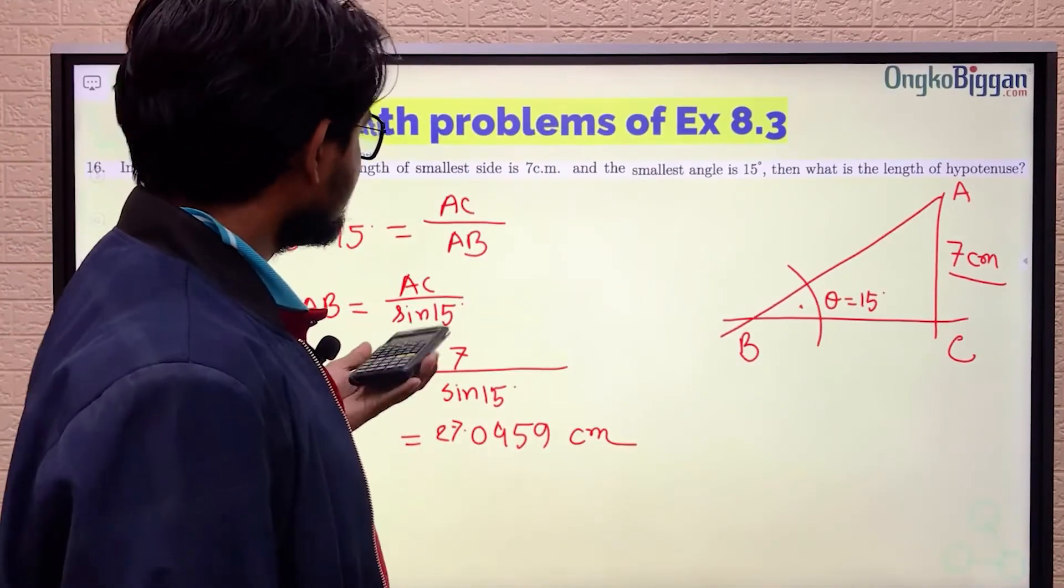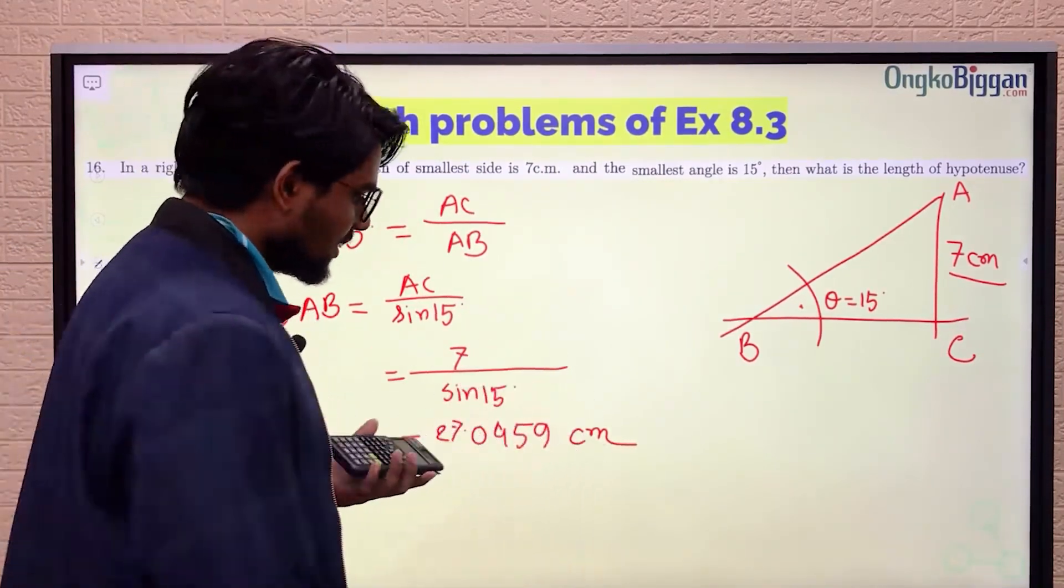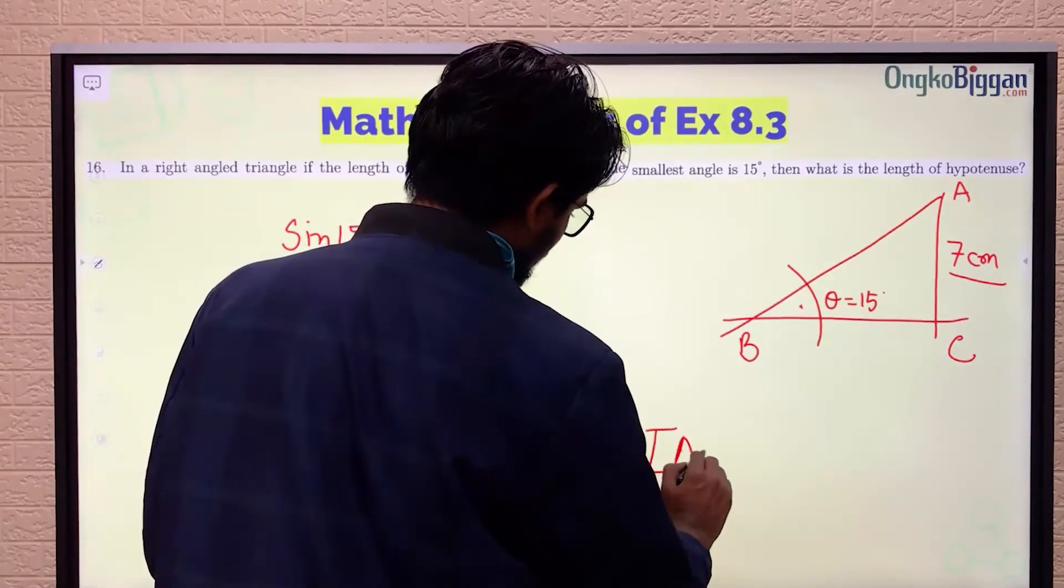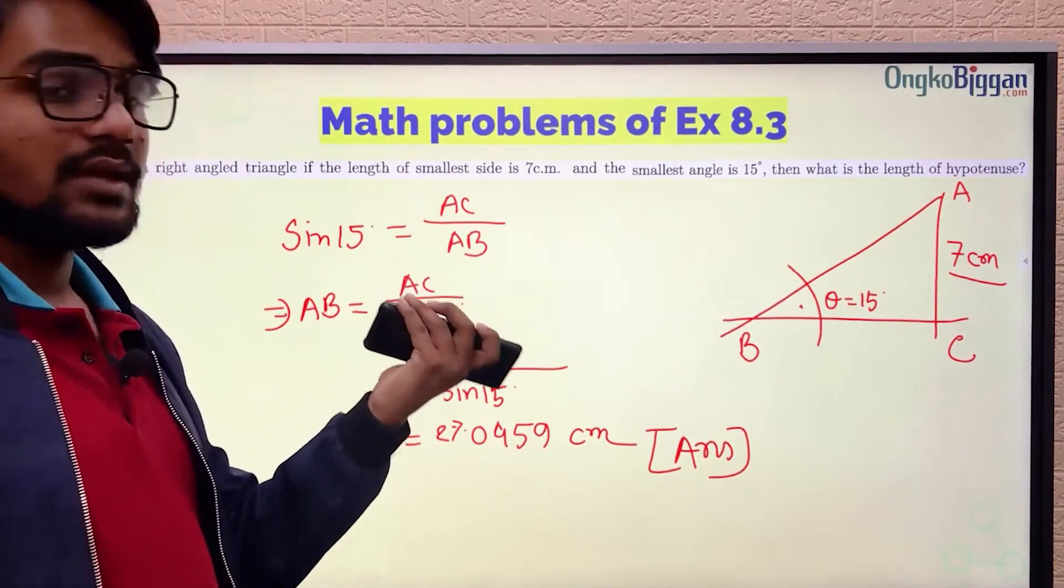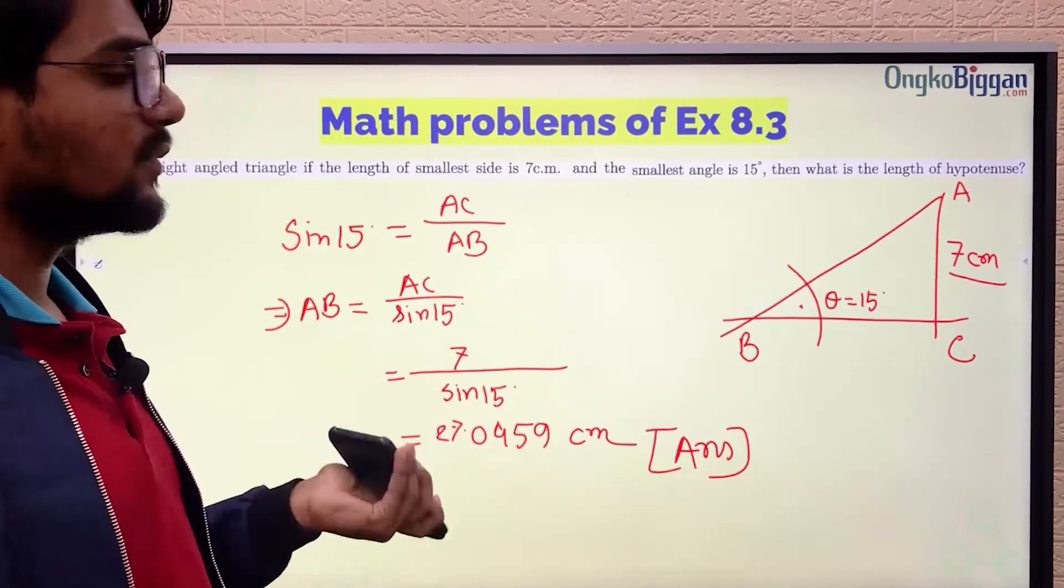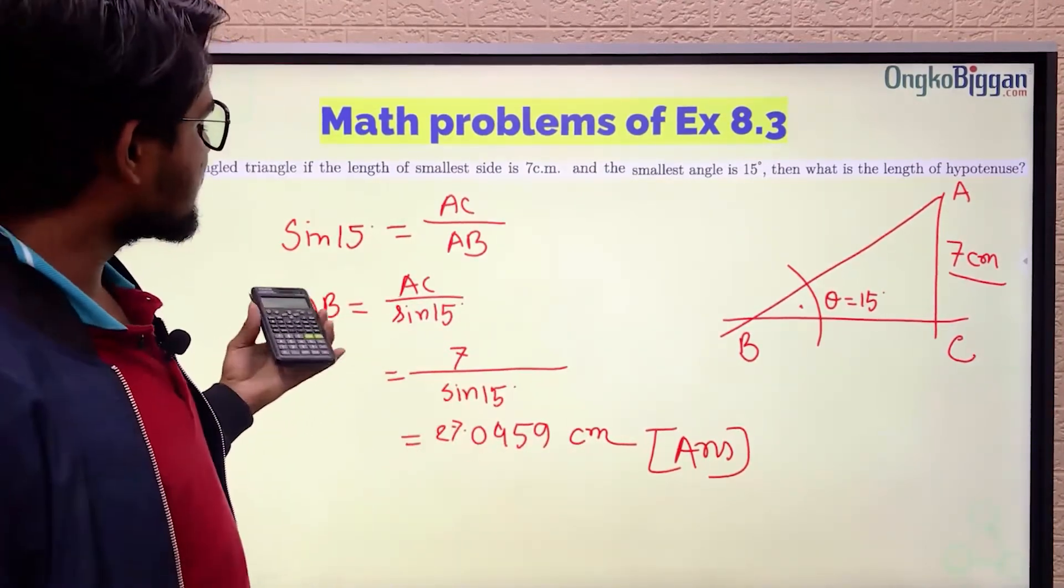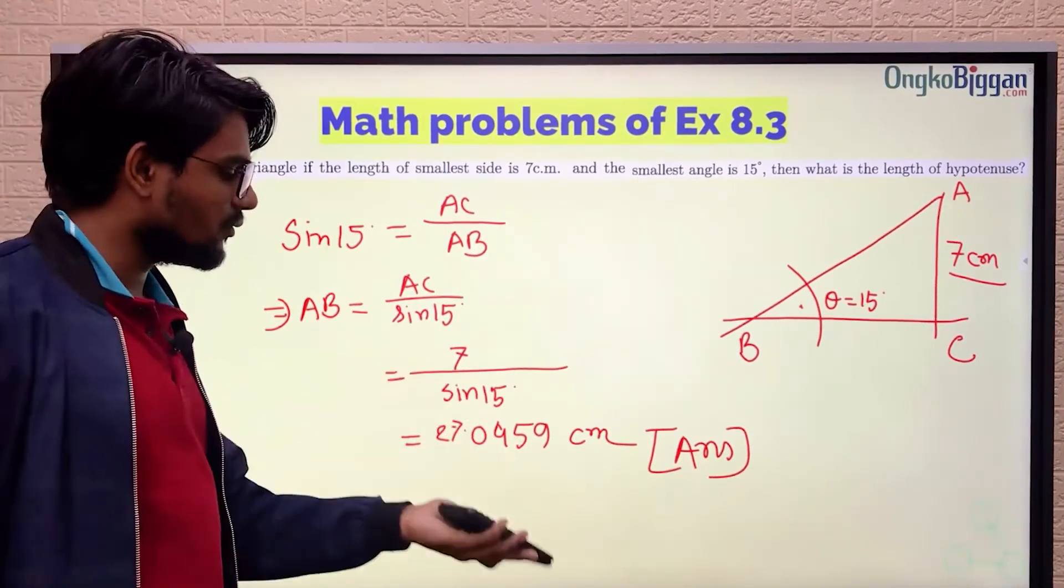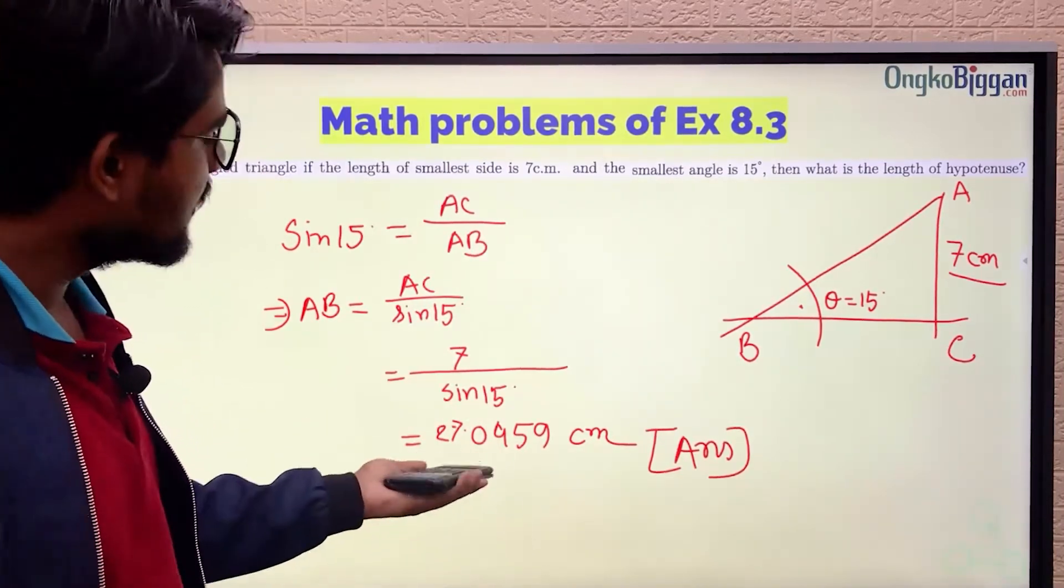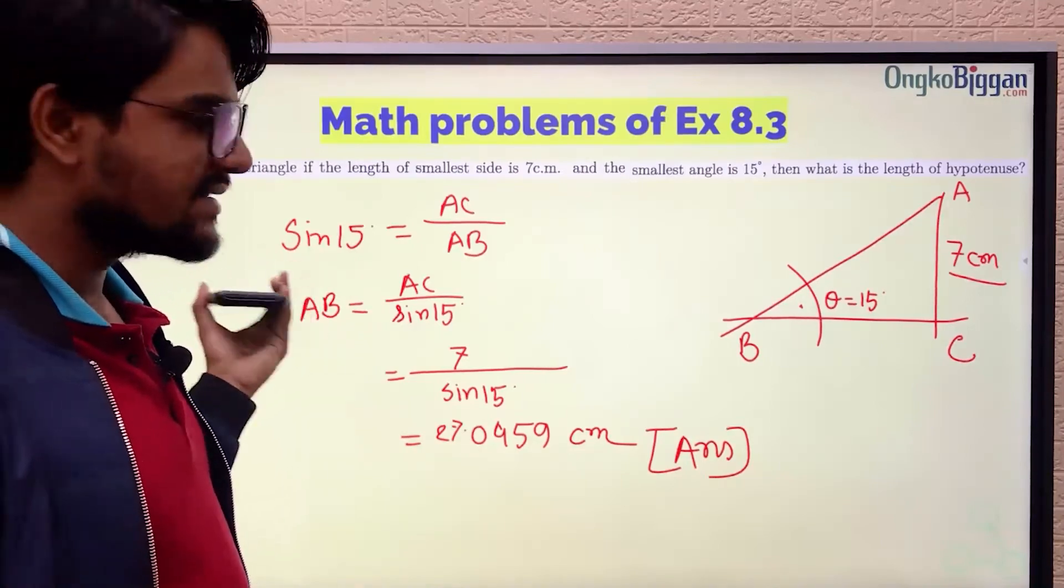So finding the hypotenuse AB was really easy, and this is how we got the value of the side AB. Just by dividing the opposite side with sin 15°, we directly got the value of the side AB, that is the hypotenuse.